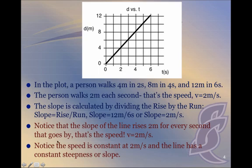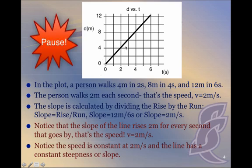The slope is calculated by dividing rise over run: 12 meters over 6 seconds gives a slope of two meters per second, which is also the speed. Notice the speed is constant at two meters per second and the line has a constant steepness or slope — the same slope all the way through because this person is walking the same speed throughout the entire six-second interval.